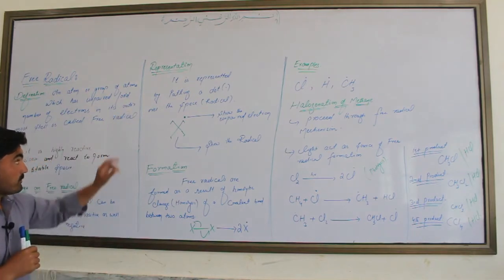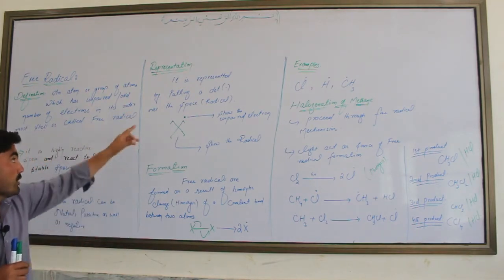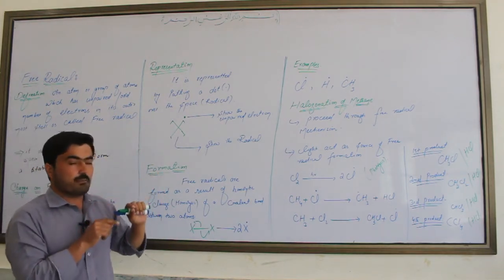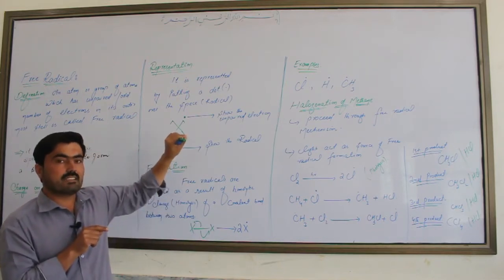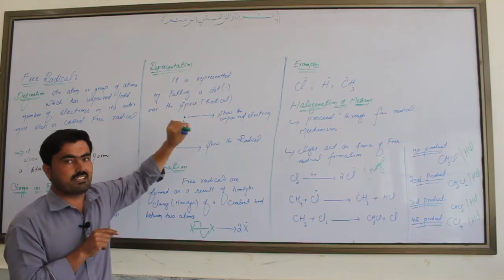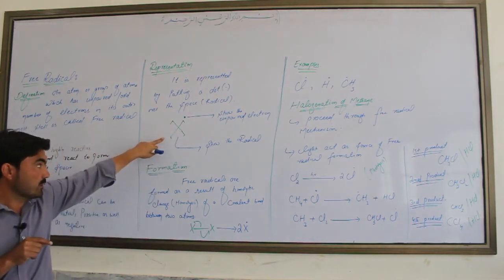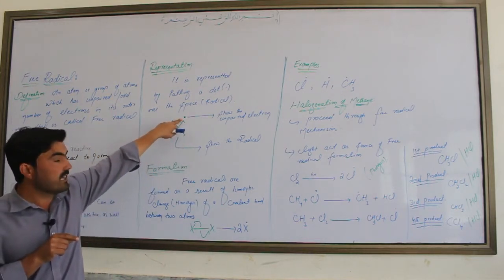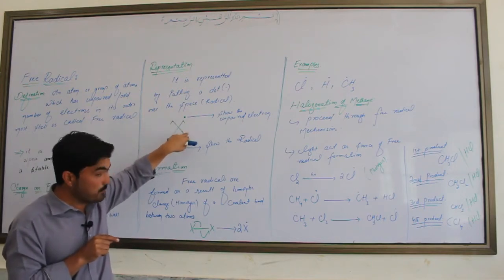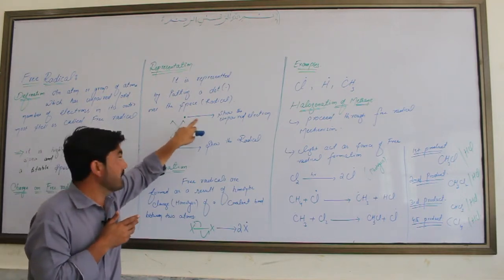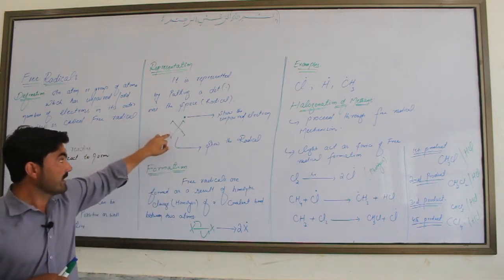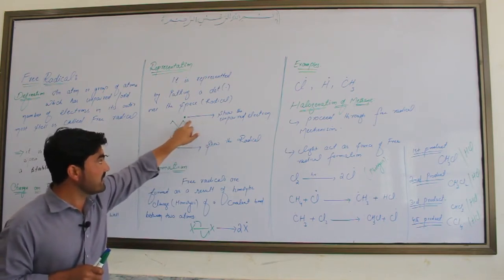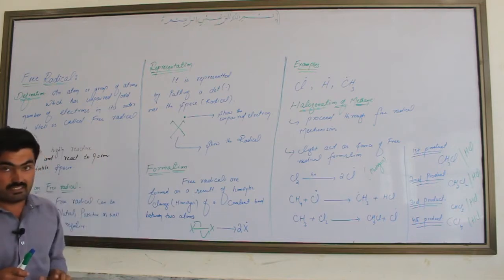Free radicals are represented by putting a dot over the species. The dot shows the presence of an unpaired electron, providing information about the free radical.